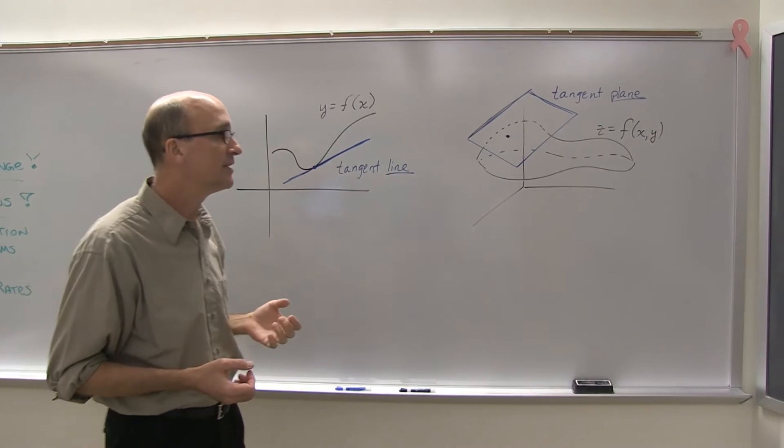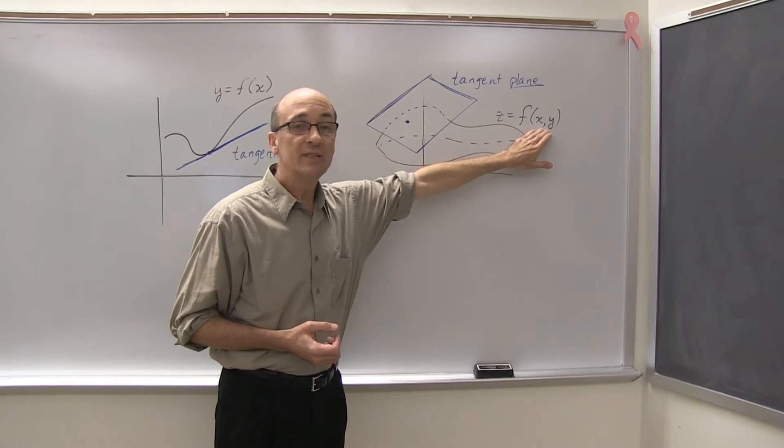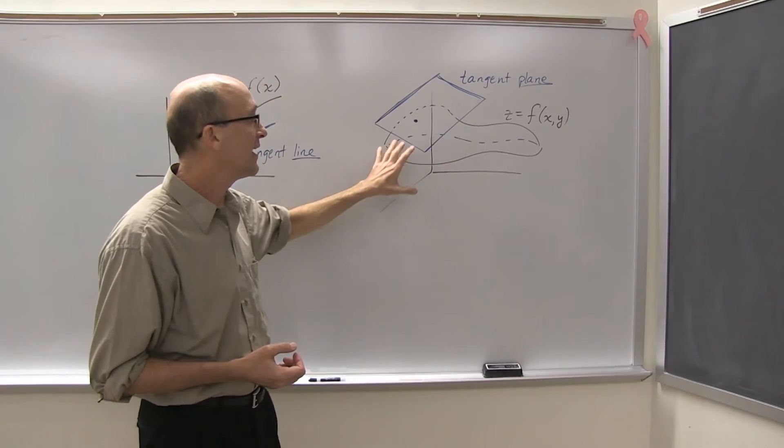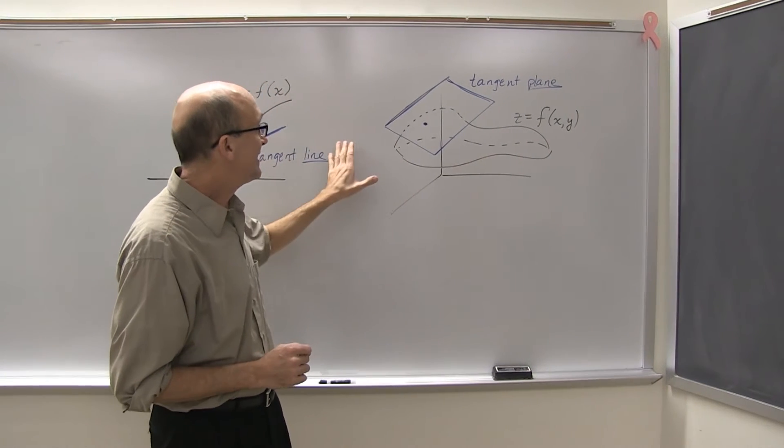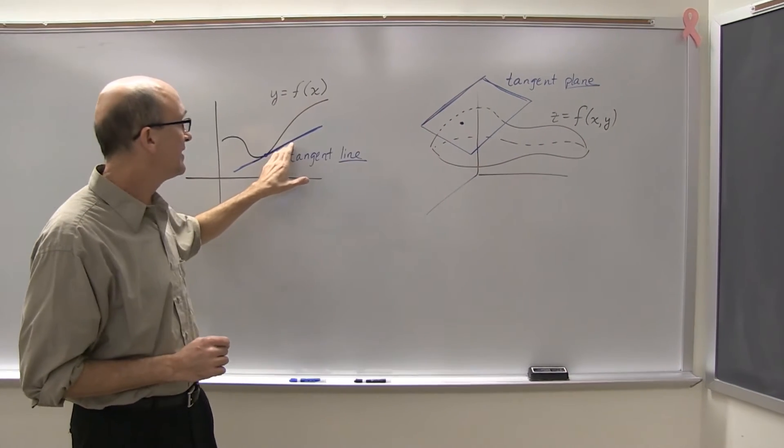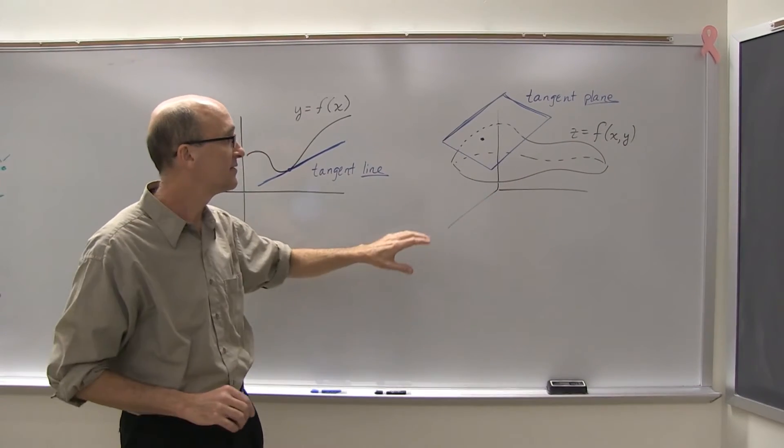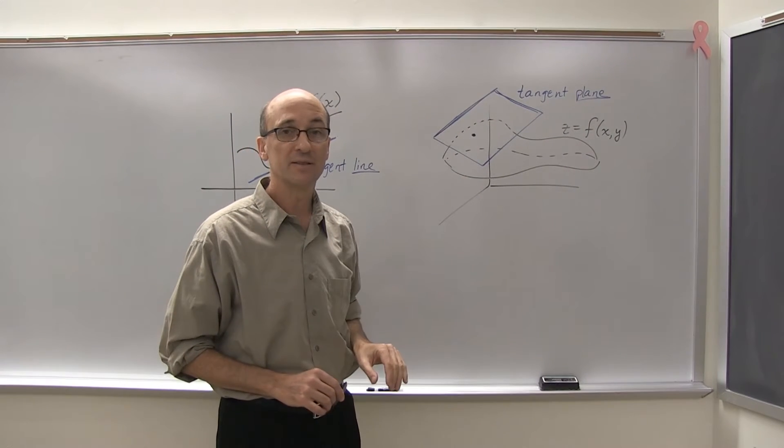Natural next step when you go to multivariable calculus would be a function, say, with two input variables x and y, one output variable z. Its graph now is a surface in three dimensions. And the thing that replaces the tangent line, the analog of the flat approximation to the curved thing, is now a two-dimensional tangent plane. This is what we're going to focus on.